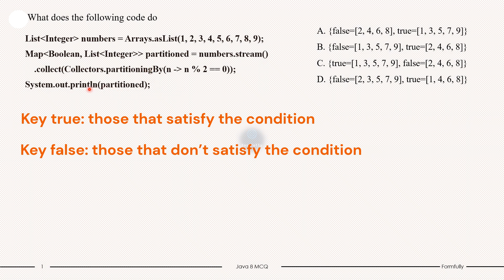Then we have a printing method that will print the partition. So the output will display the partitioned map which looks like this: false=[1, 3, 5, 7, 9] and true=[2, 4, 6, 8]. So the correct option is option B. The summary of this code is, this code demonstrates how to use Collectors.partitioningBy to divide a list of numbers into two groups based on a condition, in this case whether the numbers are even or odd. This is a simple yet powerful tool for categorizing data in Java using Stream API.